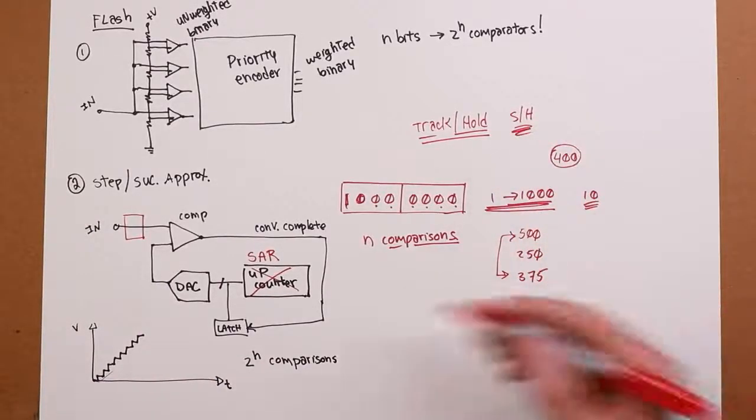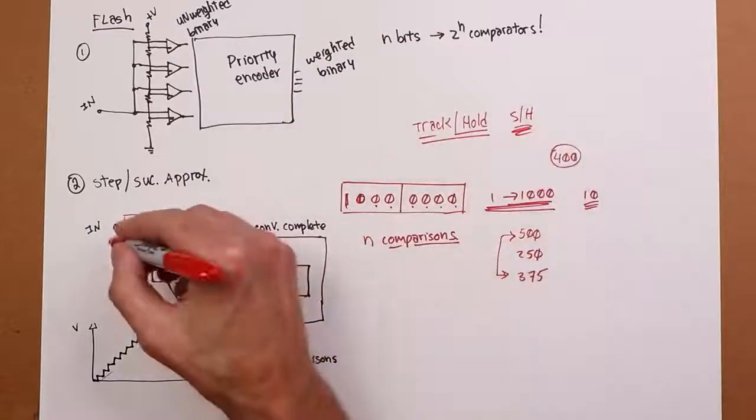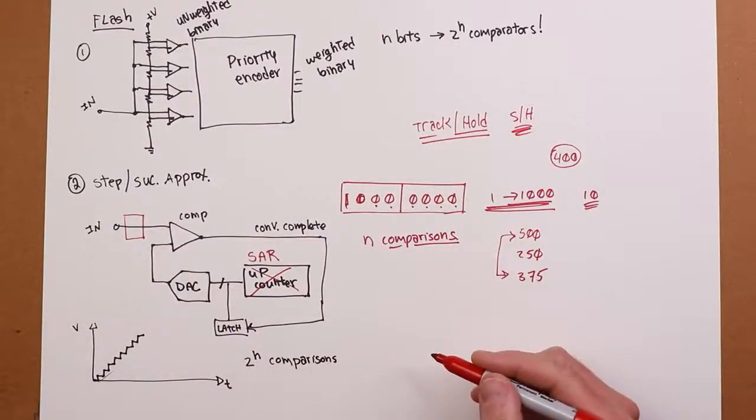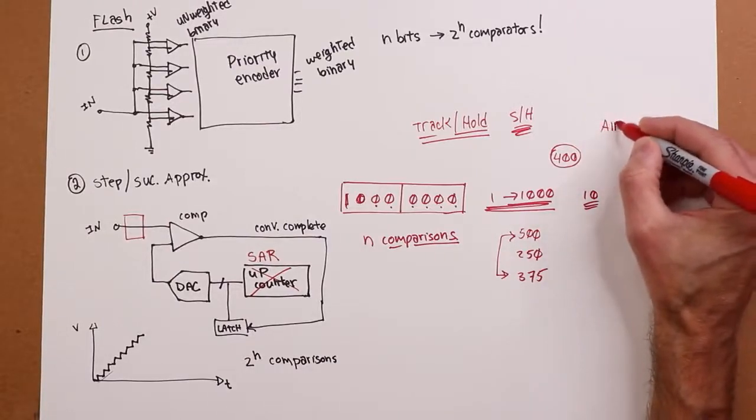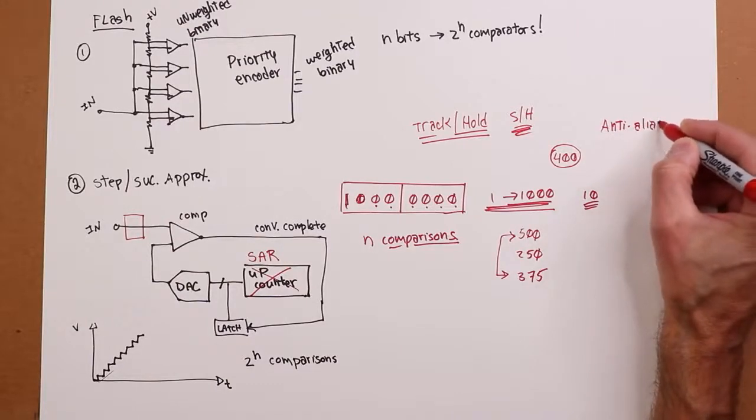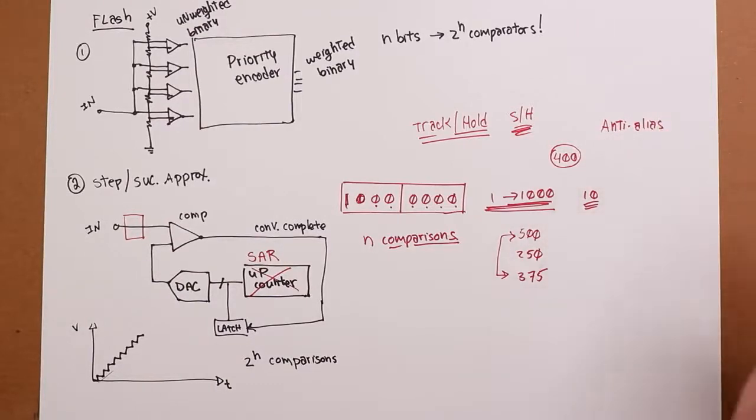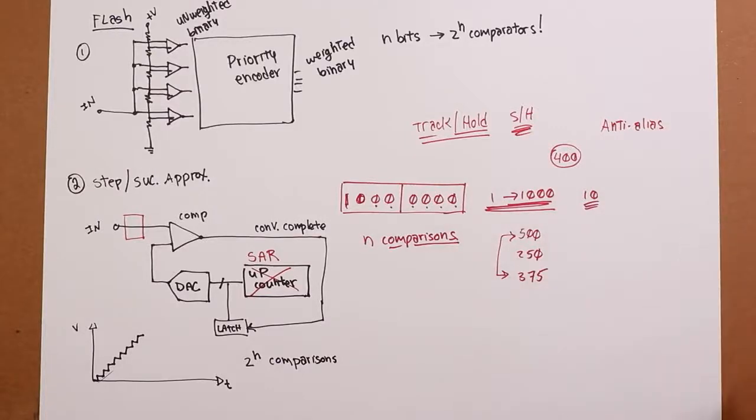Also we're going to make sure that we have to have, up front here, an anti-aliasing filter. Don't forget that. We need an anti-alias filter. So the F2 there has to be somewhat less than the sampling frequency divided by two.